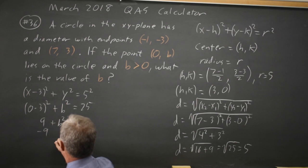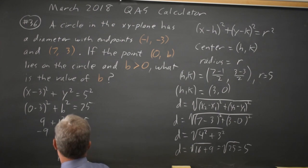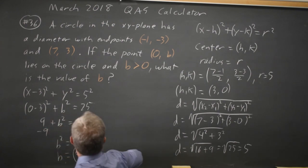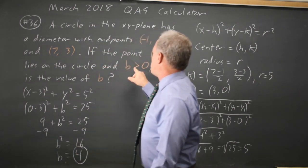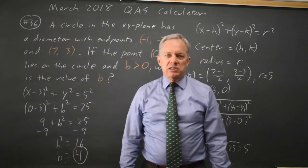Subtracting 9 from both sides to get b squared by itself, I have b squared equals 16. Square root of both sides to get b equals positive or negative 4. I'm going with positive 4 because they told us b is the positive coordinate.